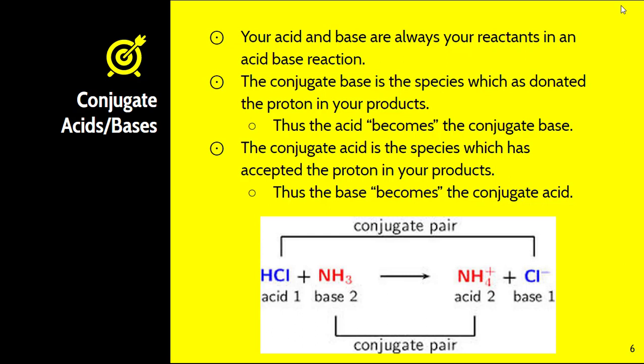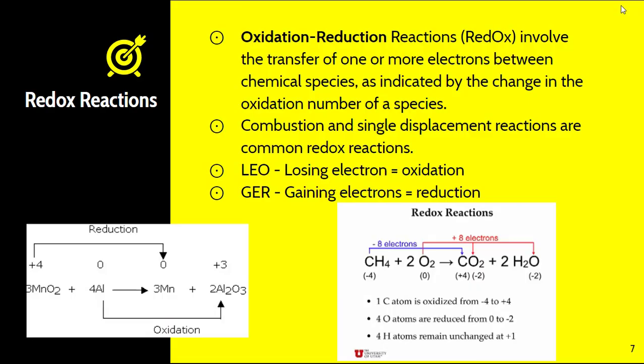The conjugate acid is the species which has accepted the proton in your products and the base becomes the conjugate acid. You have NH3 here. NH3 accepts the hydrogen or accepts the proton from HCl, becomes NH4+, and therefore becomes the conjugate acid. So it is a bit tricky because your acid becomes your conjugate base and your base becomes your conjugate acid. A couple key vocab terms we really need to make sure that we know.